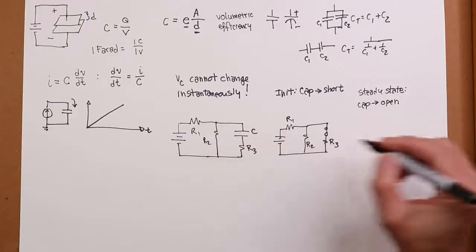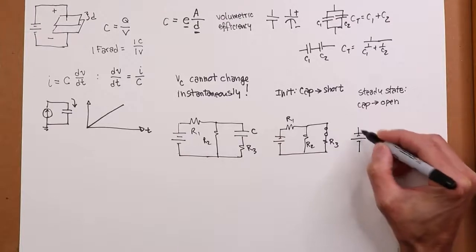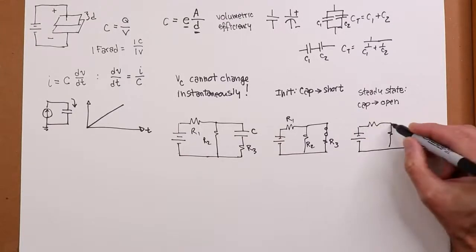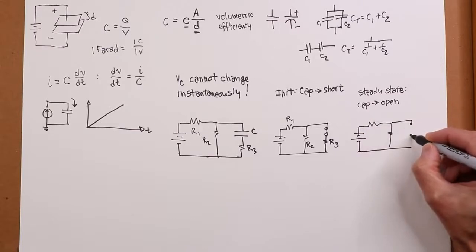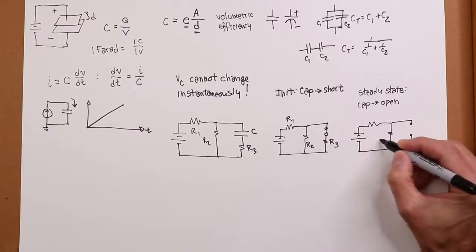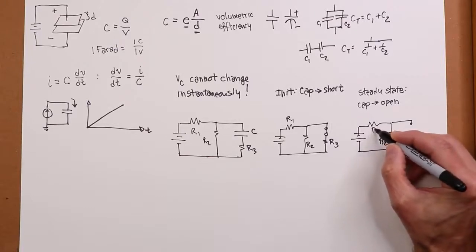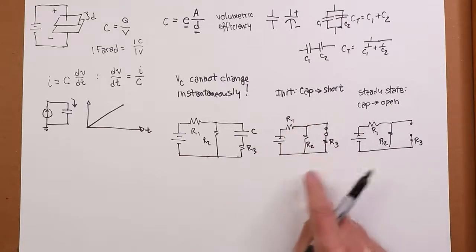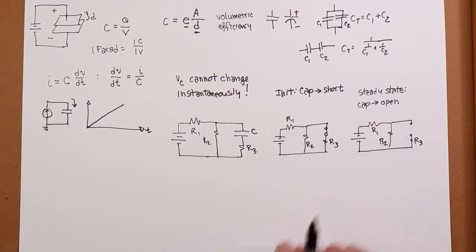And now your original circuit looks like this. So this is an open out here, which means R3 basically disappears, and your circuit only has R2 and R1 left with the power supply. Completely different circuit. Initially cap shorts, we see R2 in parallel with R3. We wait long enough, R3 disappears, and it's just R1, R2.